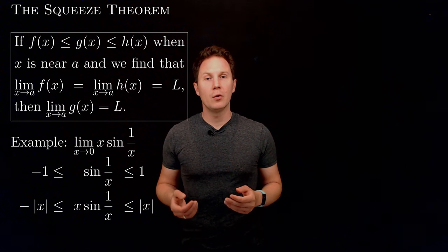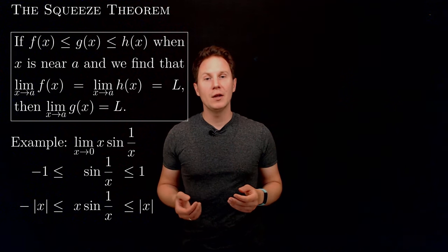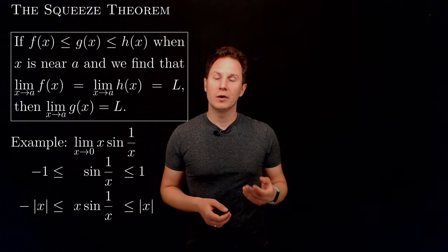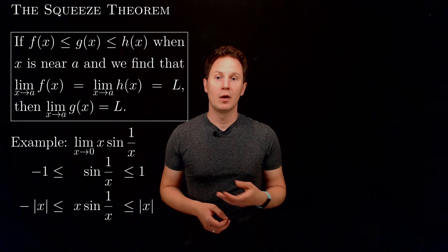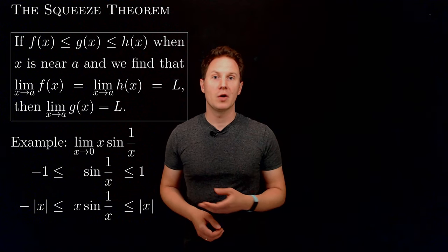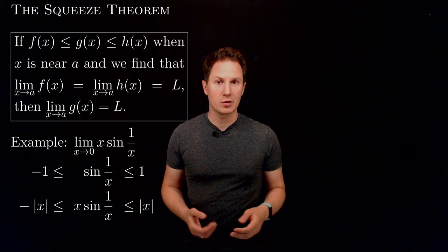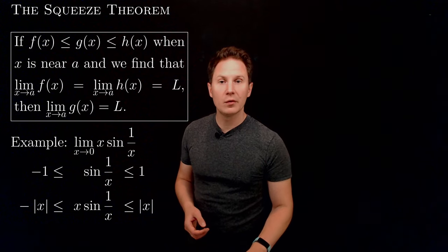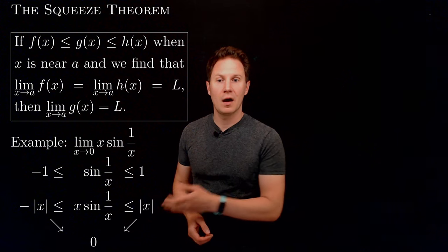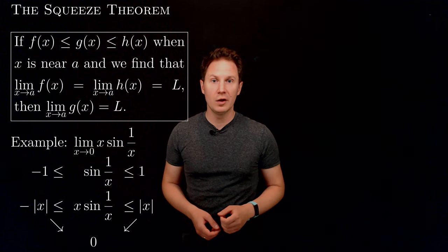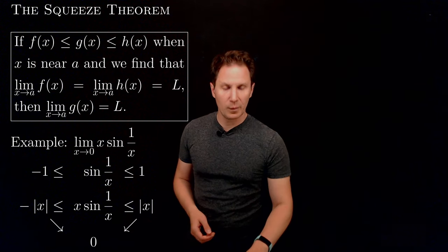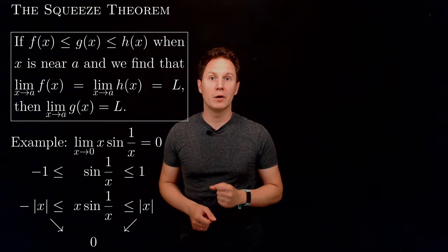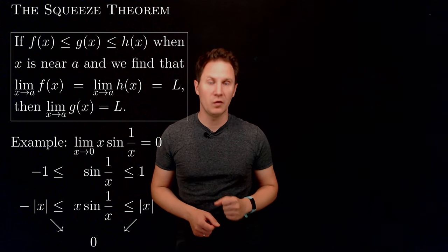So we have for the lower bound minus the absolute value of x, and for the upper bound the absolute value of x — both of which are simpler functions whose limits as x approaches 0 we know exist and are equal to 0. Hence, by the squeeze theorem, we know that the limit we were after must also be 0.